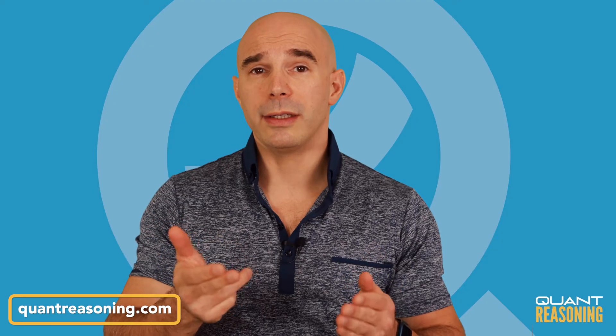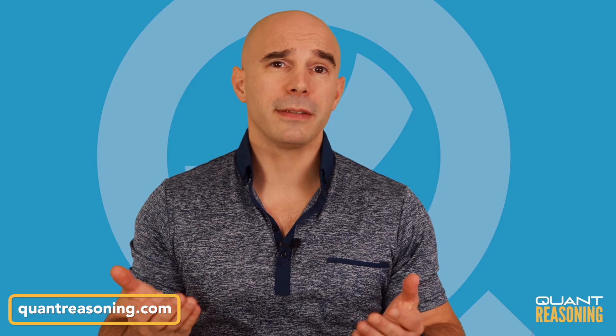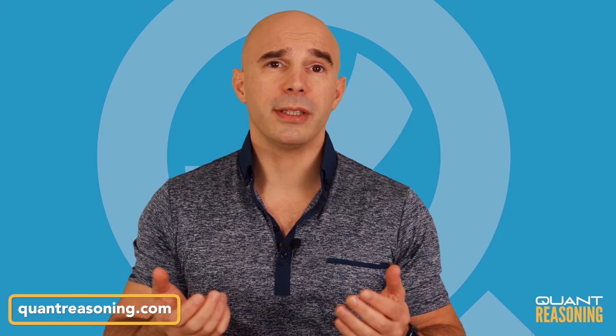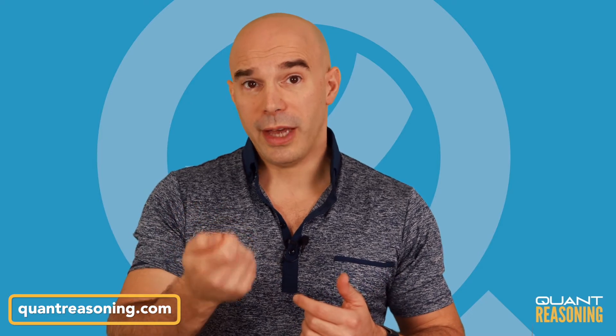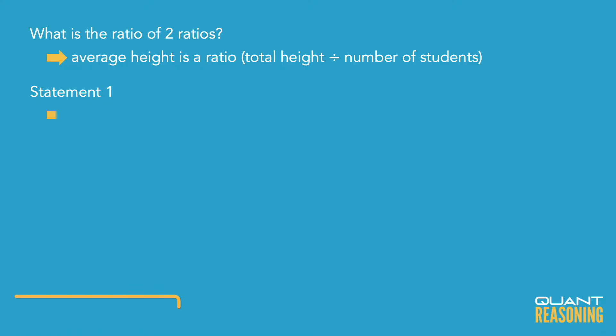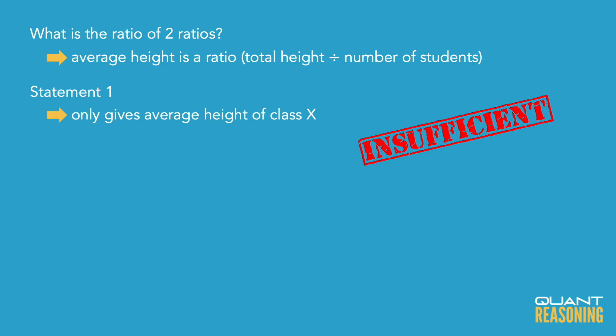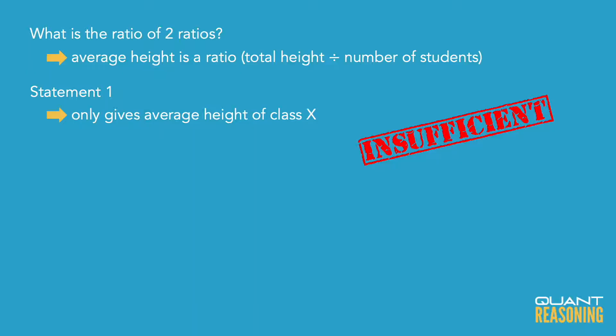Statement one can't possibly be sufficient on its own because it only gives us the average height of one of the classes. It's like someone saying this ratio is so-and-so — what's the ratio of that to this other ratio which I'm telling you nothing about? Of course that's not sufficient, so eliminate answer choices A and D.